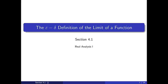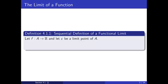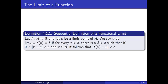You most likely encountered this definition in an earlier calculus course. We begin with a function f from A to R, where A is a subset of real numbers, and a limit point c of the domain set A. Then we say that the limit as x approaches c of f of x is equal to L, if for every positive epsilon, there is a positive delta, such that if the distance between x and c is strictly positive and not greater than delta, and x is in the domain set A, it follows that the distance between f of x and L is less than epsilon.